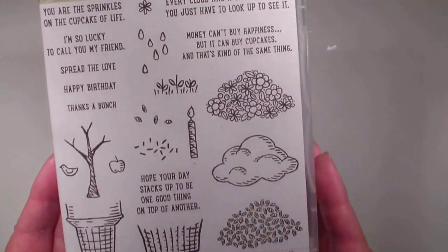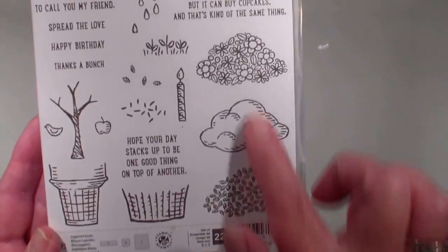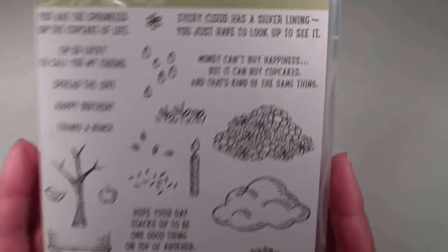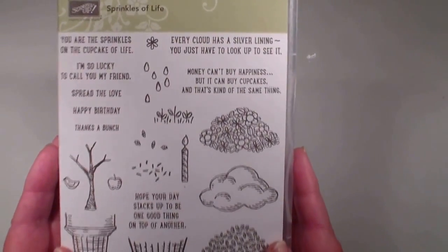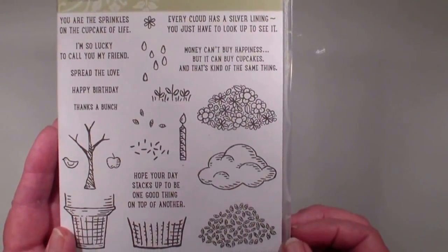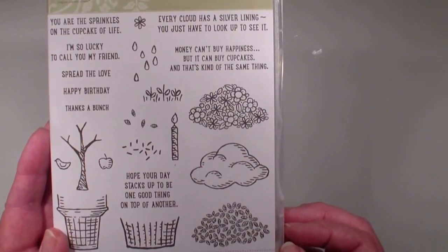It is a gorgeous photopolymer set. It has 22 different stamps. I fell in love with it as soon as I saw it and decided that would be my first Stamp of the Month kit for the start of the new catalog.